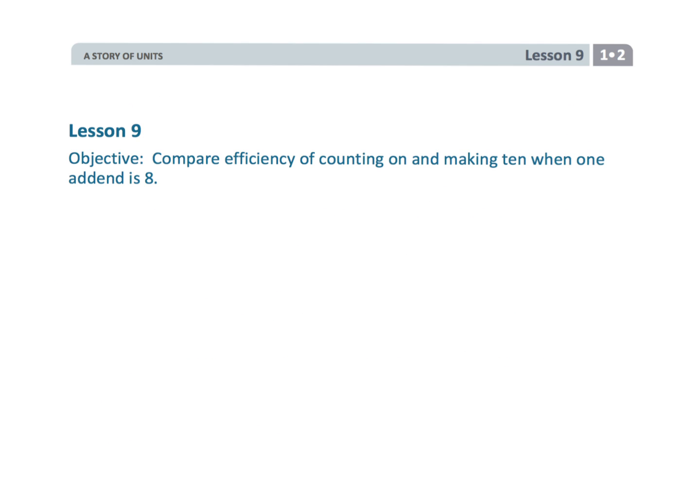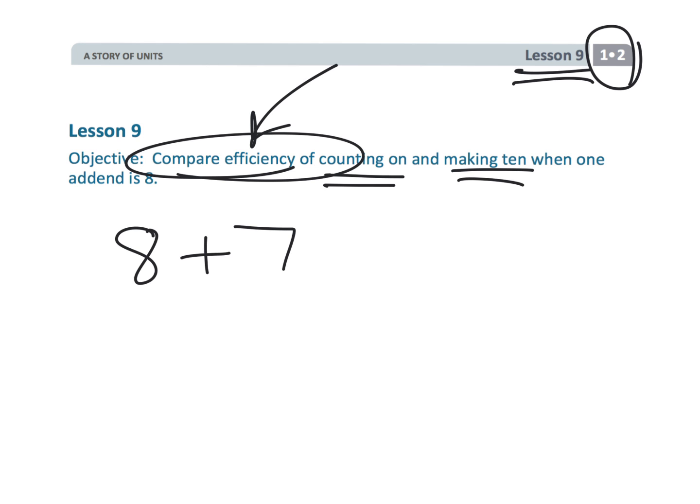And that wraps up first grade, module 2, lesson 9, where we're really focusing a little bit on efficiency. Rather than counting on, we want to use that decomposition technique, making a landmark or a friendly number, making 10. So the idea would be 8 plus 7. We want students to fairly quickly see that instead of doing 8 plus 7, we could do 10 plus 5, which of course is 15.